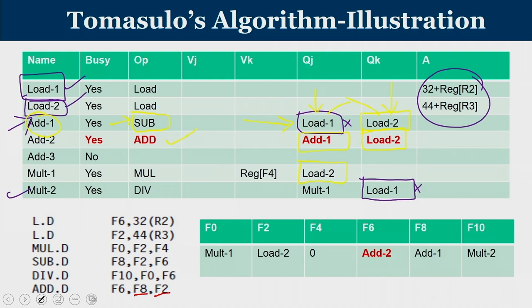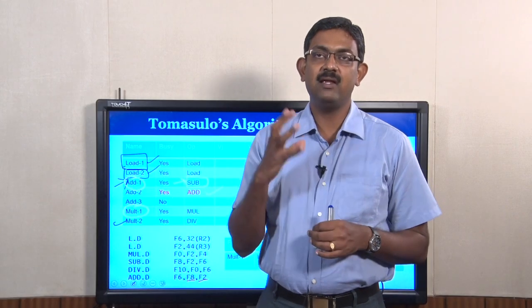When multiplication completes — which happens after Load2 provides one operand and F4 is already available — Mult1 produces a result that Mult2 is waiting for. So there is a cascading effect: the whole chain of data dependencies, where each instruction waits for another, is resolved through reservation stations monitoring the CDB. In this way, operand forwarding, register renaming, and handling of WAR and WAW hazards are all taken care of in Tomasulo's algorithm.